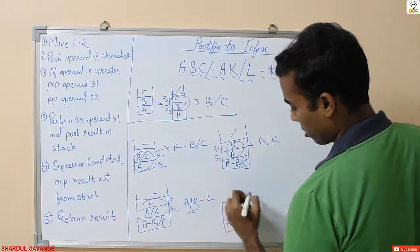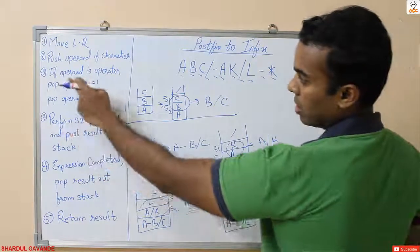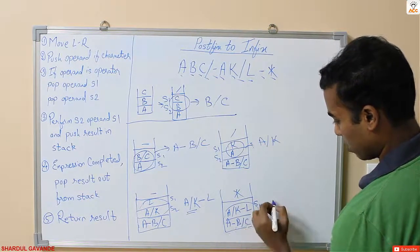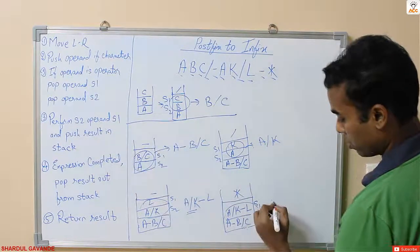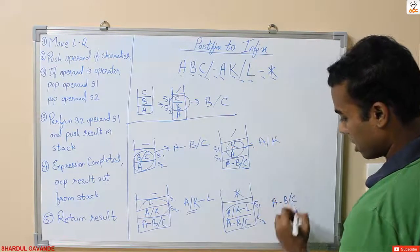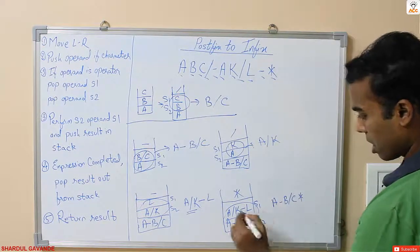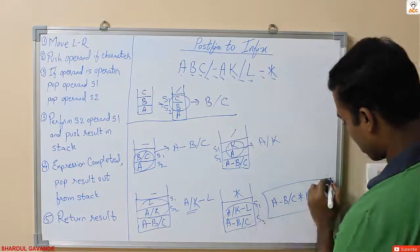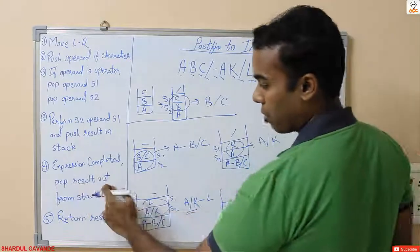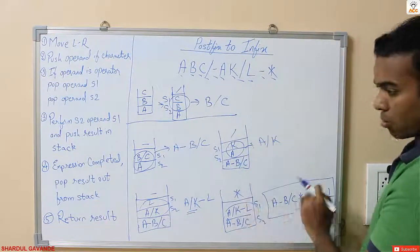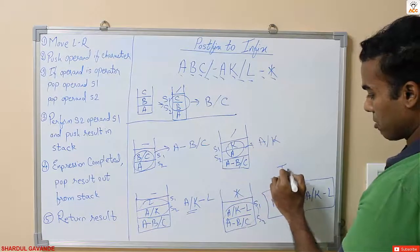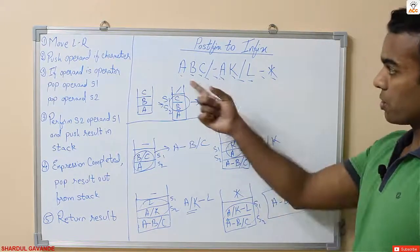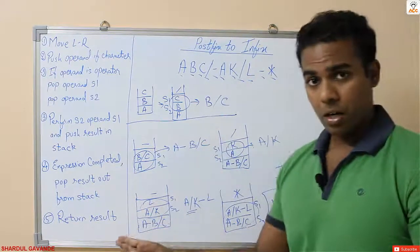Last, I have the star — multiplication. Again, since it is an operator, I pop s1 and s2. s2 is 'a minus b divided by c' and s1 is 'a divided by k minus l'. The expression is now completed. I pop the final result out from the stack and return it. This is my infix expression: (a minus b divided by c) multiplied by (a divided by k minus l).